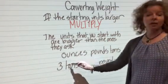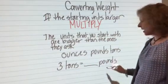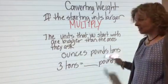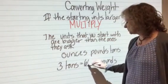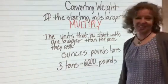If the starting units larger, multiply. And that's where you have to remember 2,000 pounds in a ton, or look at your conversion chart. 2,000 times 3. 6,000.